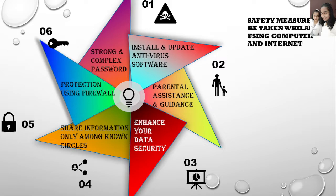Fourth, share information only among known circles. You should never post your personal data with unknown groups or publicly, because shared information travels very fast and can spread globally. Fifth is protection using a firewall. A firewall is basically a filtering point which acts as a wall between the user and the interface, and when connected to the internet it prevents unauthorized access from other public networks, denying permission to enter your private network and protecting your computer system.